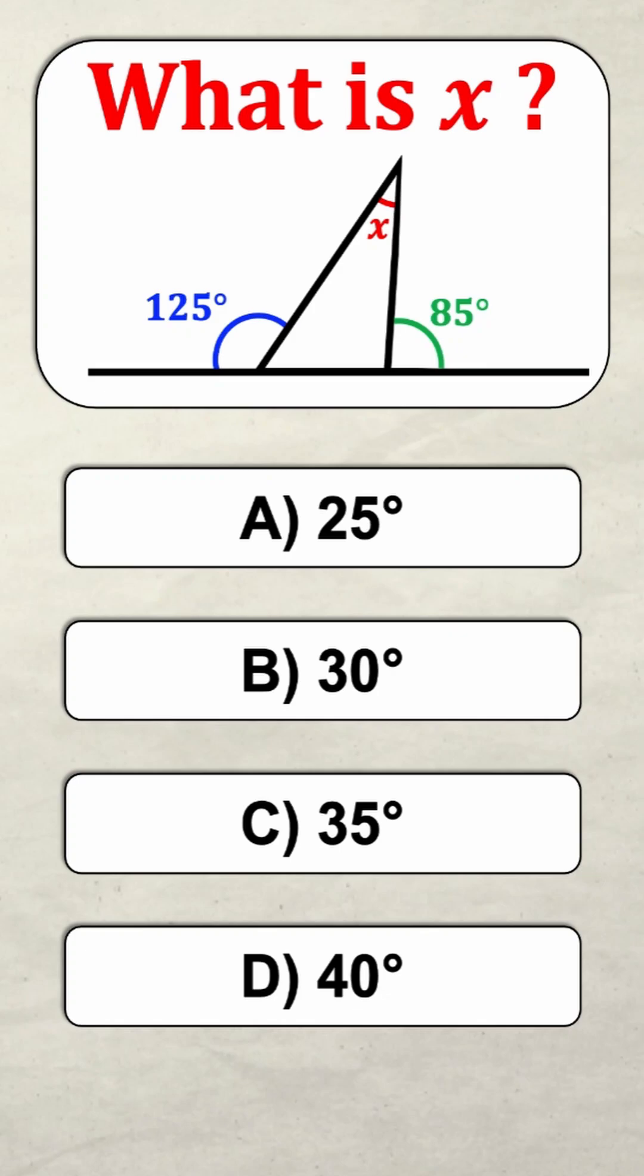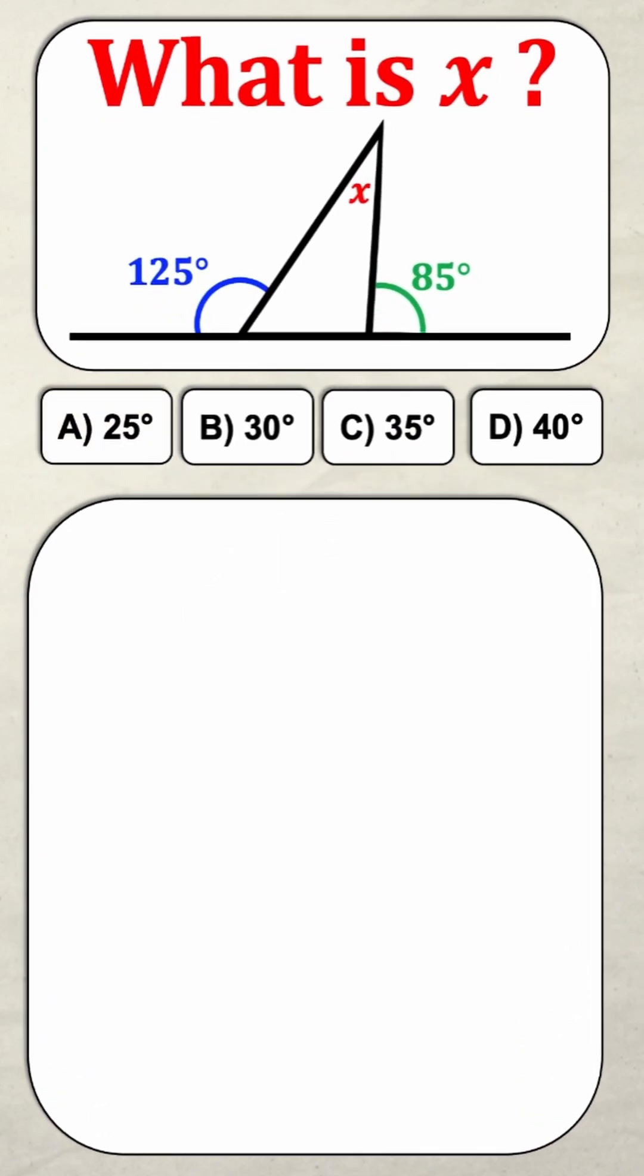Can you solve this geometry question? Let's learn how to solve it together. Here we have a triangle with an unknown angle x and we're being asked to calculate it given the two angles shown.